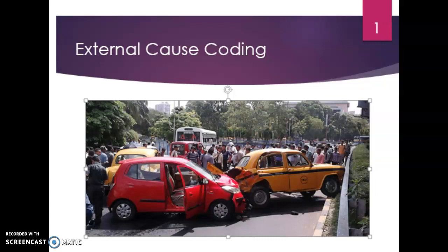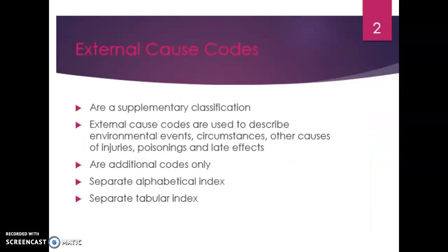In this video, we are going to learn how to assign external cause codes in our ICD-10-CM code manual. External cause codes are a supplementary classification used to describe any kind of event that caused an injury, an illness, a poisoning, or a late effect — whether it was environmental, an animal, or some kind of specific accident. These codes help us tell the story of how that injury or complication happened.